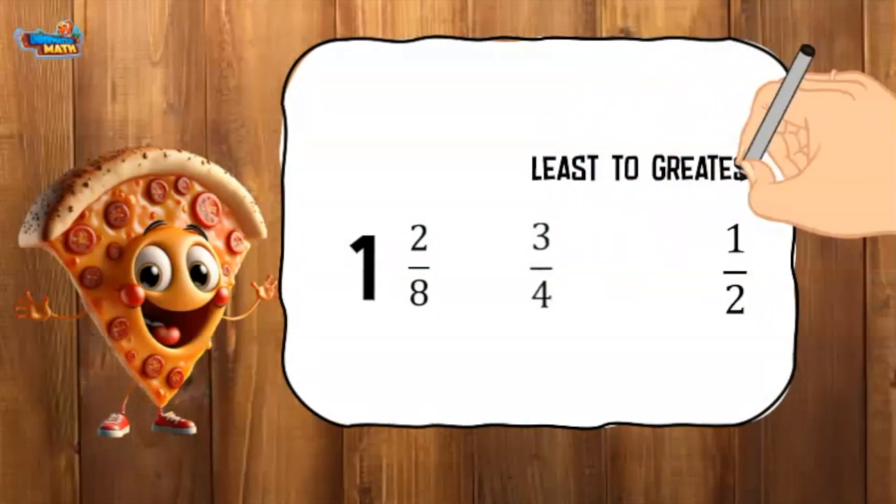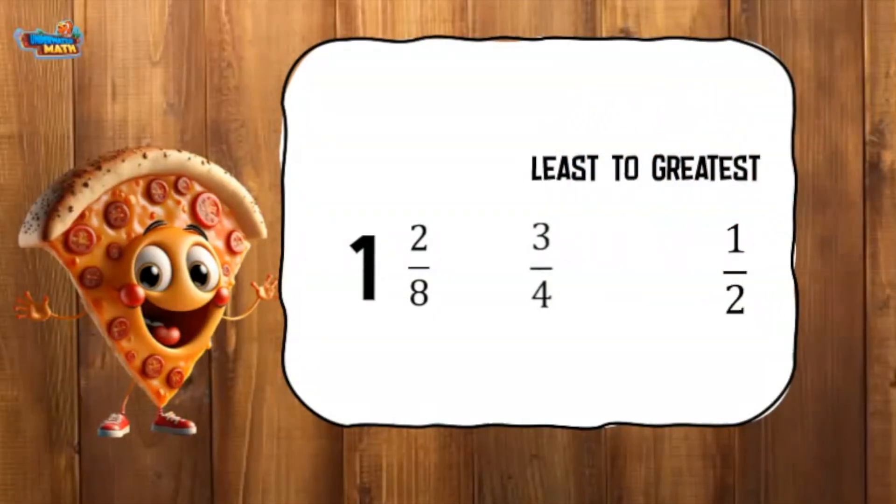This last example involves a mixed number. I will put the numbers in order from least to greatest. When ordering and comparing mixed numbers, you start by comparing the whole. There is only one mixed number. This is the largest fraction because it has one whole and two eighths of a whole all together.